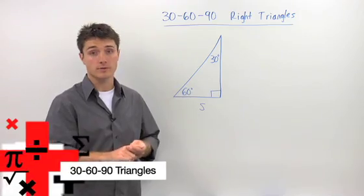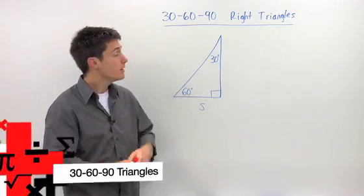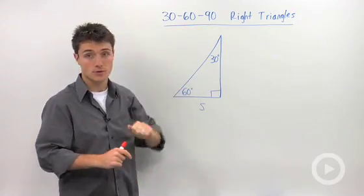There are two special right triangles: 45-45-90 and 30-60-90 triangles.